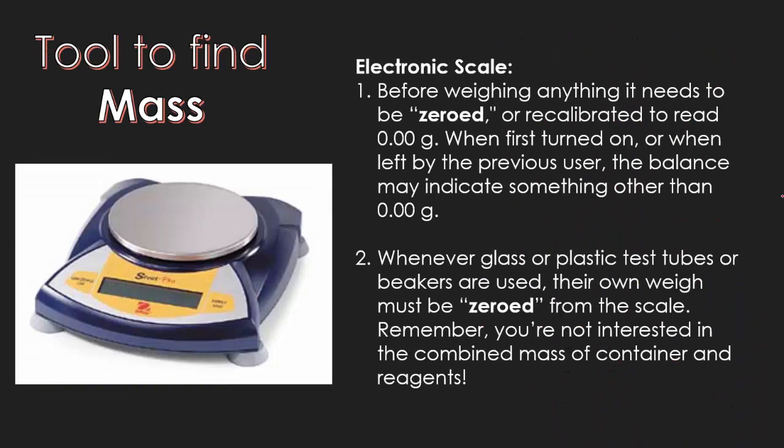We have electronic scales in our class to measure mass. Before weighing anything, it needs to be zeroed or recalibrated to read 0.00 grams. When first turned on or when left by the previous user, the balance may indicate something other than 0.00, so you just press that little button. Whenever glass or plastic test tubes or beakers are used, their own weight must be zeroed from the scale. Remember to put them on there first and then press the zero button.